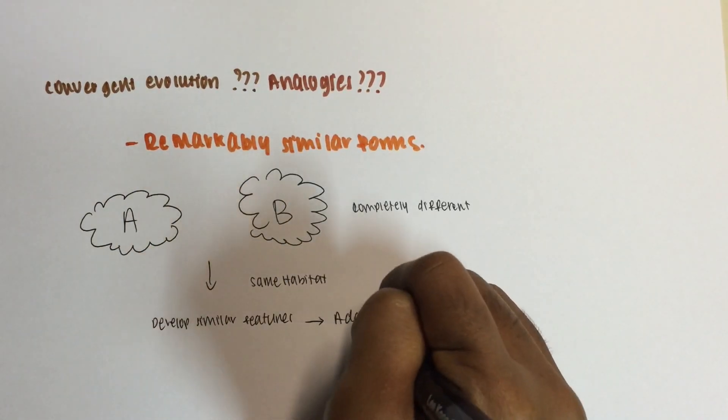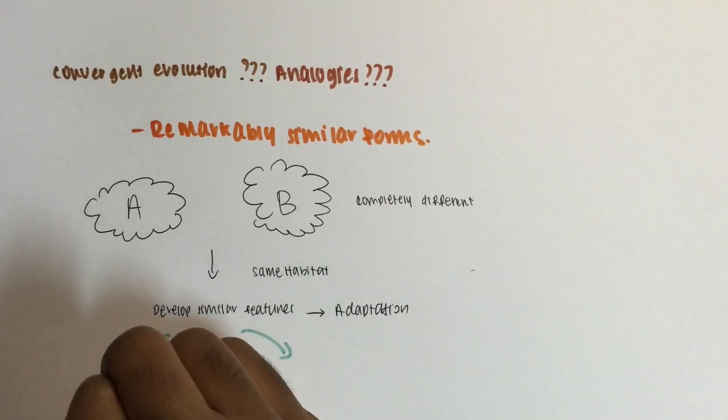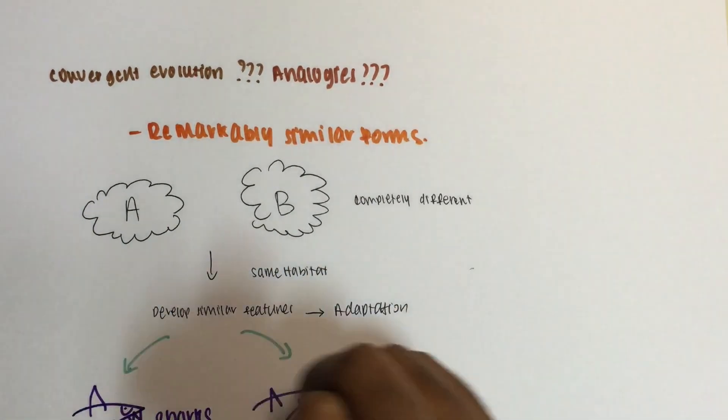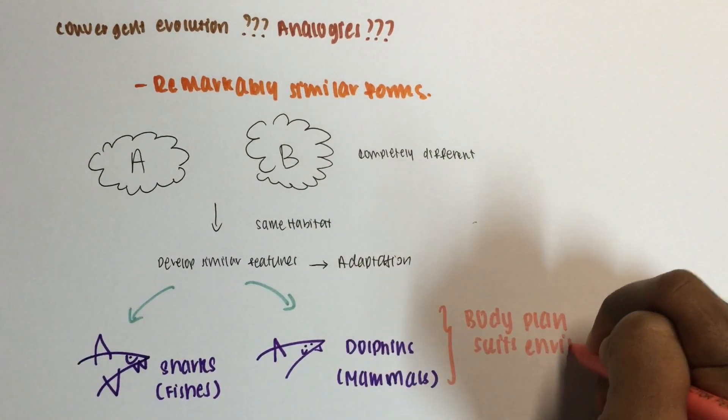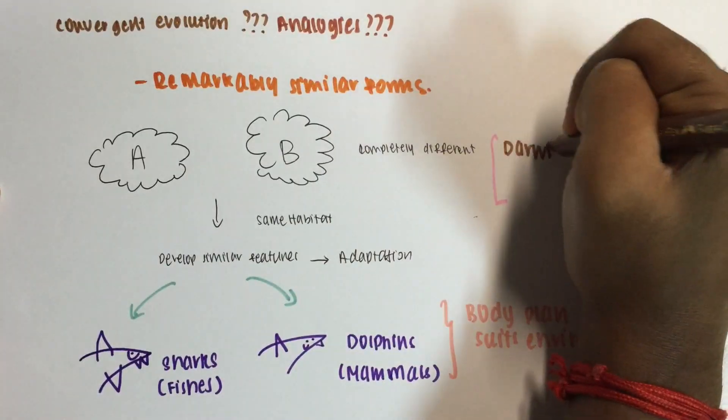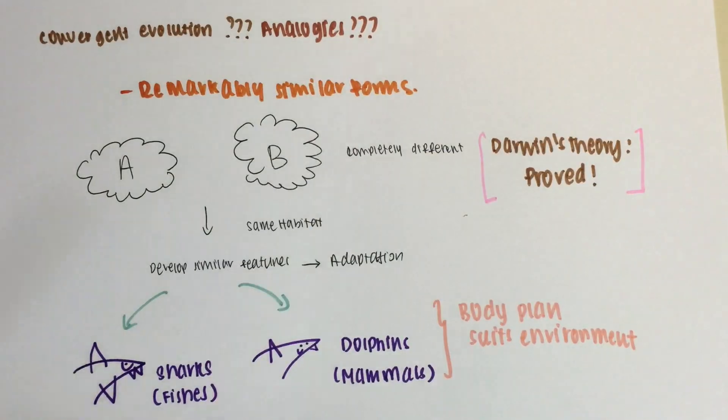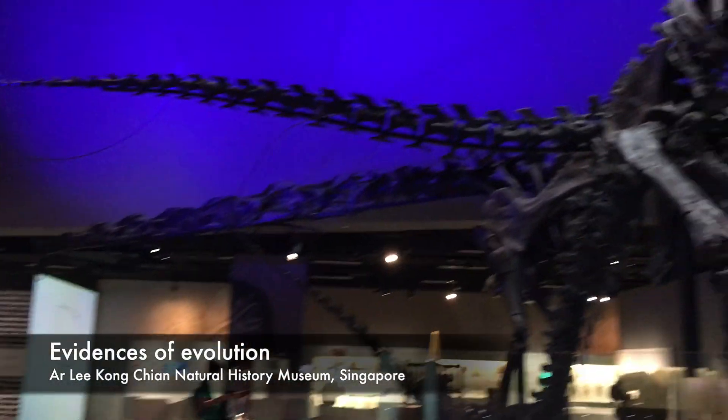When organisms A and B, which are completely different, live in the same habitat, they develop similar features in order to adapt to the environment, which results in sharks and dolphins looking just like each other with the same body pattern. With that, we have proven and demystified Darwin and his theories.